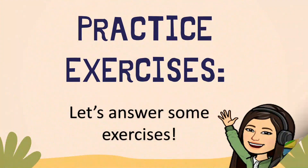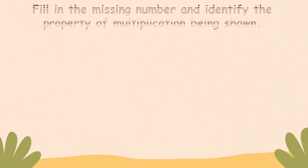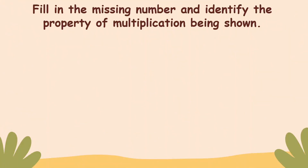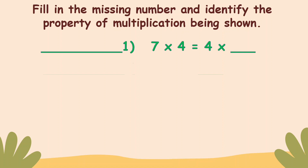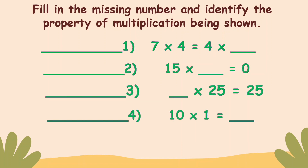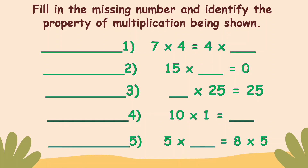Let's practice. Fill in the missing number and identify the property of multiplication being shown. Question one: seven times four equals four times blank. The answer is seven. And the property is commutative property.